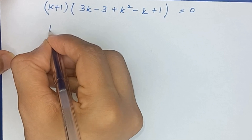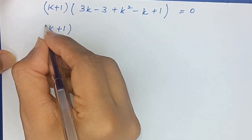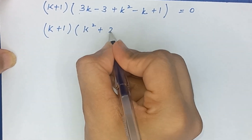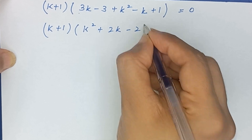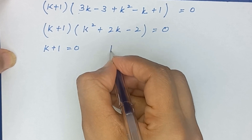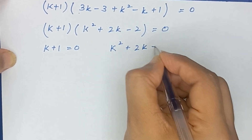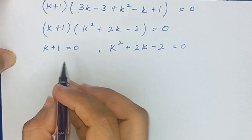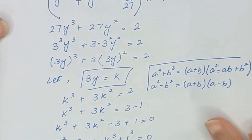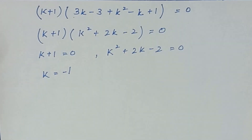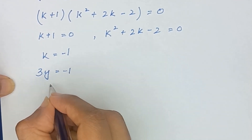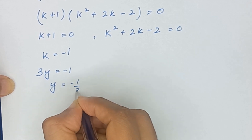So we have (k + 1)(k² + 2k − 2) = 0. From k + 1 = 0, k = −1. Recalling k = 3y, we get 3y = −1, so y = −1/3.